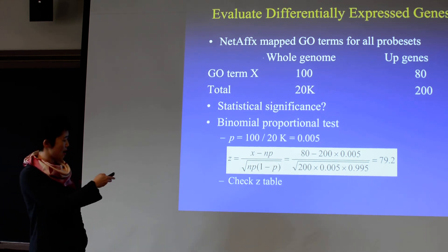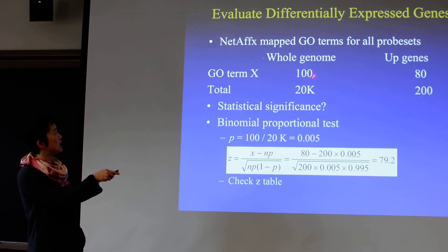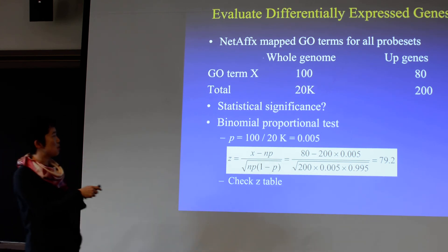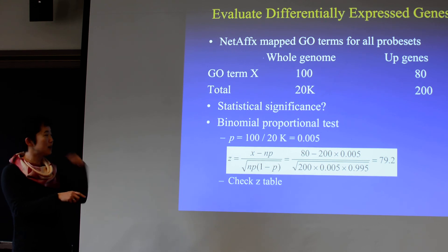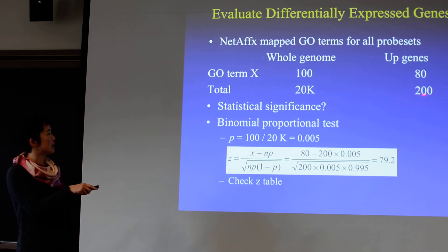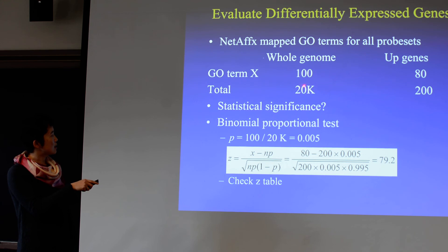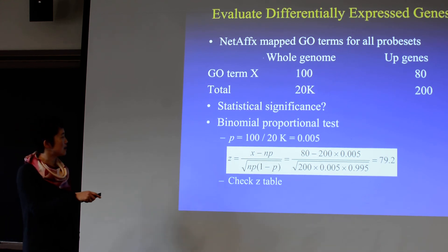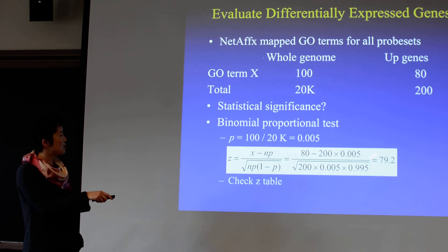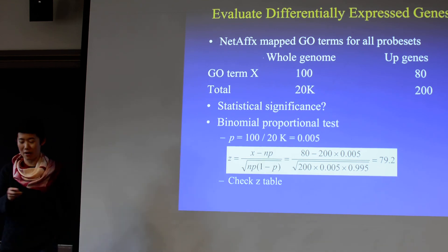Out of those genes, there are 80 that have a particular GO term, although in the whole genome of 20,000 genes, there are only 100 genes with that GO term. We can use a binomial proportional test: the chance of any random gene having that GO term is only 0.005. If 200 genes are differentially expressed and 80 have this GO term, X is 80, and 200 times 0.005 is your expected. You'll get a Z-score — check the Z-table. It's a ridiculously small p-value, so you know it's significant.